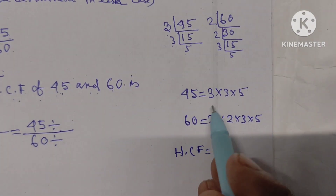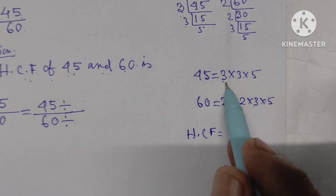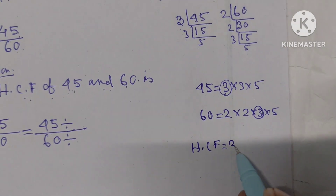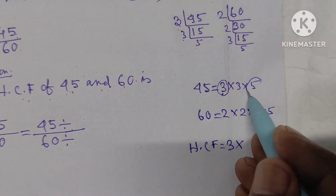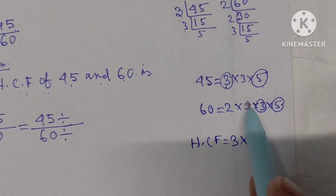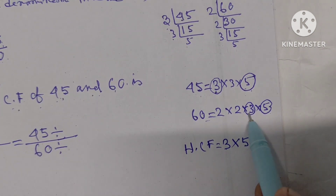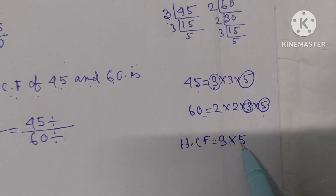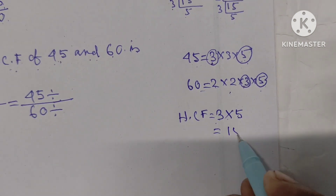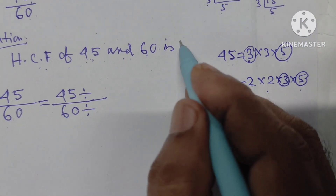Now we have to find the common factors. We have 3 from 45 and 3 from 60, so we write 3. We also have 5 from 45 and 5 from 60. So the common factors give us SCF of 45 and 60 as 15.